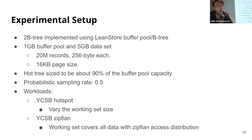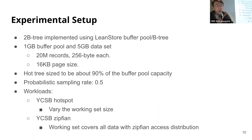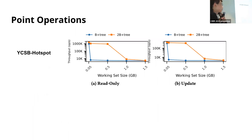We mainly use the YCSB workload with two access distributions. The first is a YCSB hotspot with a varying working set size, where the working set consists of randomly chosen records from the entire key space. We mainly look at point read and point update operations. The x-axis is the size of the working set, varying from 50 megabytes to 1.5 gigabytes, which is larger than the buffer pool capacity. What we see is that 2BTree is able to cache much more data than a single B-tree, thanks to record-level data migration and its two-structuring approach.